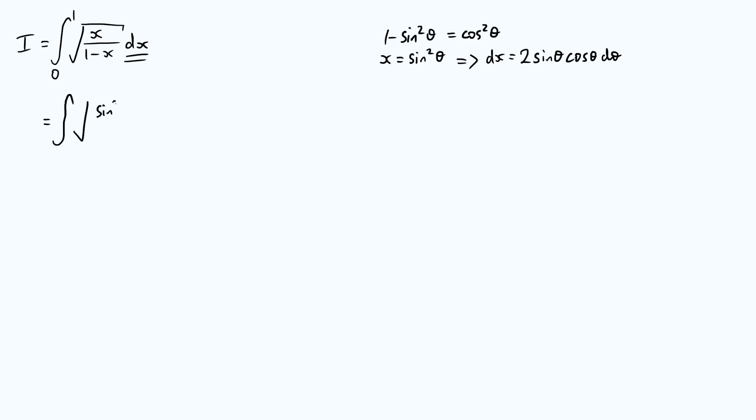So x, remember, was sine squared of theta. Then on the denominator, we have 1 minus sine squared theta, which we said was cos squared theta. So let's put that there. And then our dx is 2 sine theta cos theta d theta.